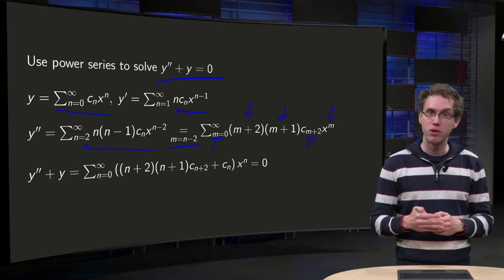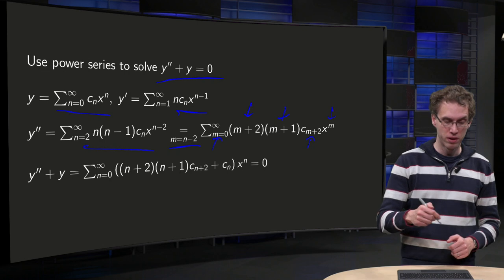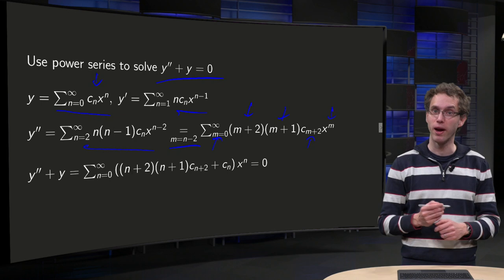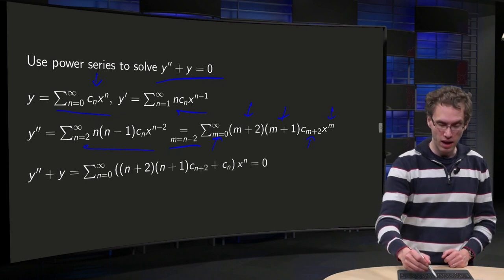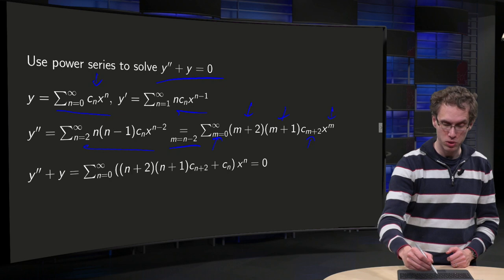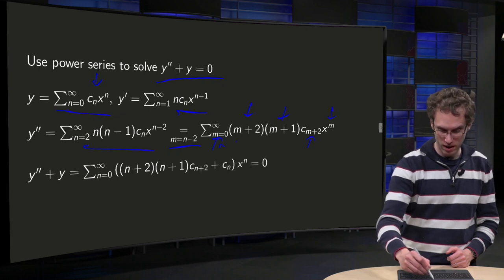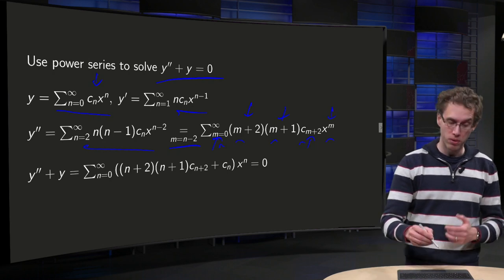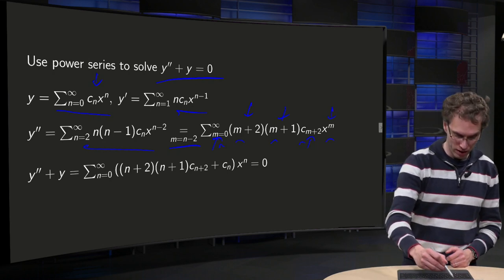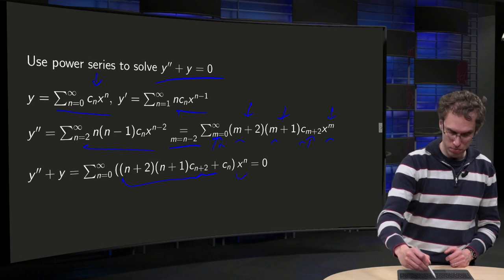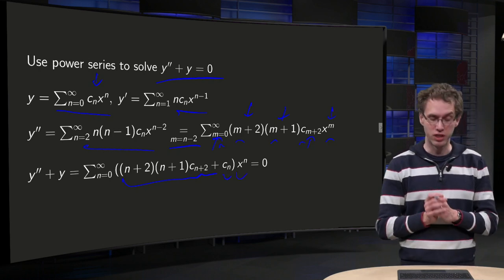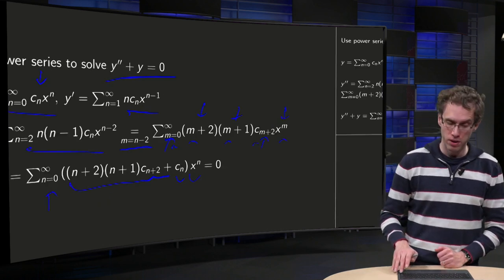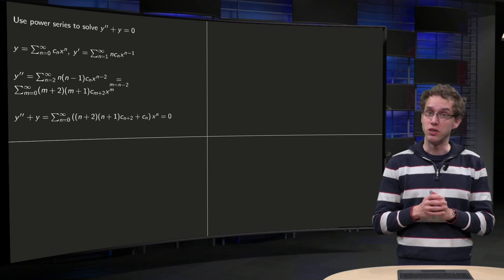So we want to plug it into the differential equation. We have y double prime plus y. For y we have the sum from n equals 0 to infinity of cₙ xⁿ. Since m is just a summation index, we can rename it to n, giving us (n+2)(n+1) c_{n+2} plus cₙ times xⁿ. So our y double prime is over here, plus y equals 0, with the summation sign. There we have plugged our expressions into the differential equation.